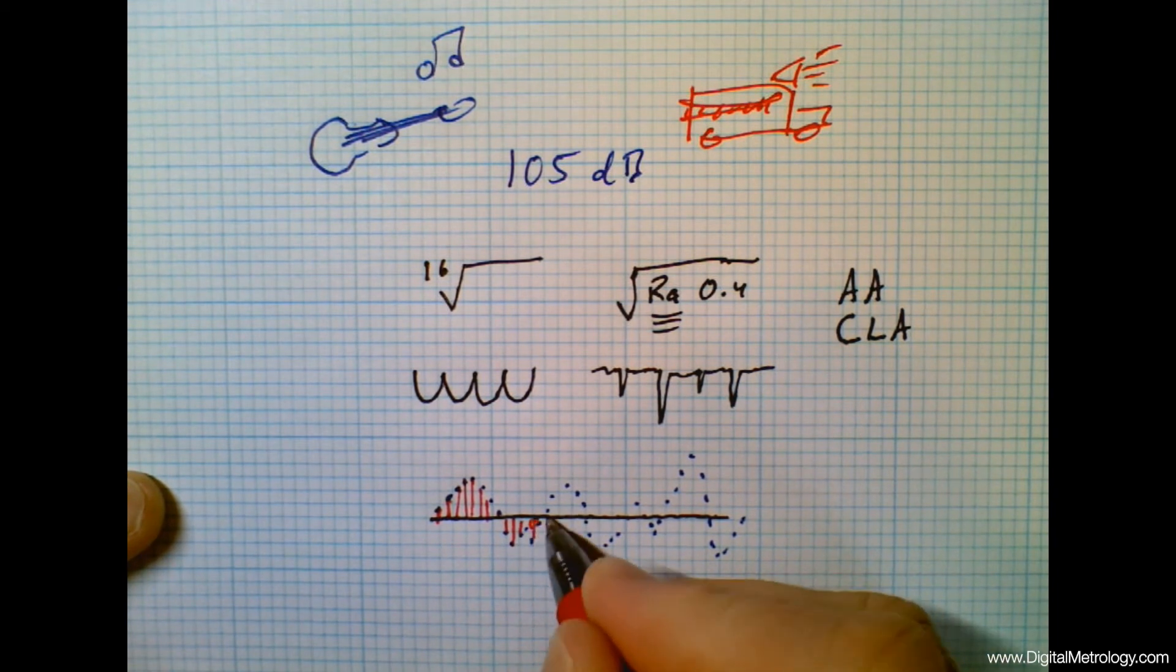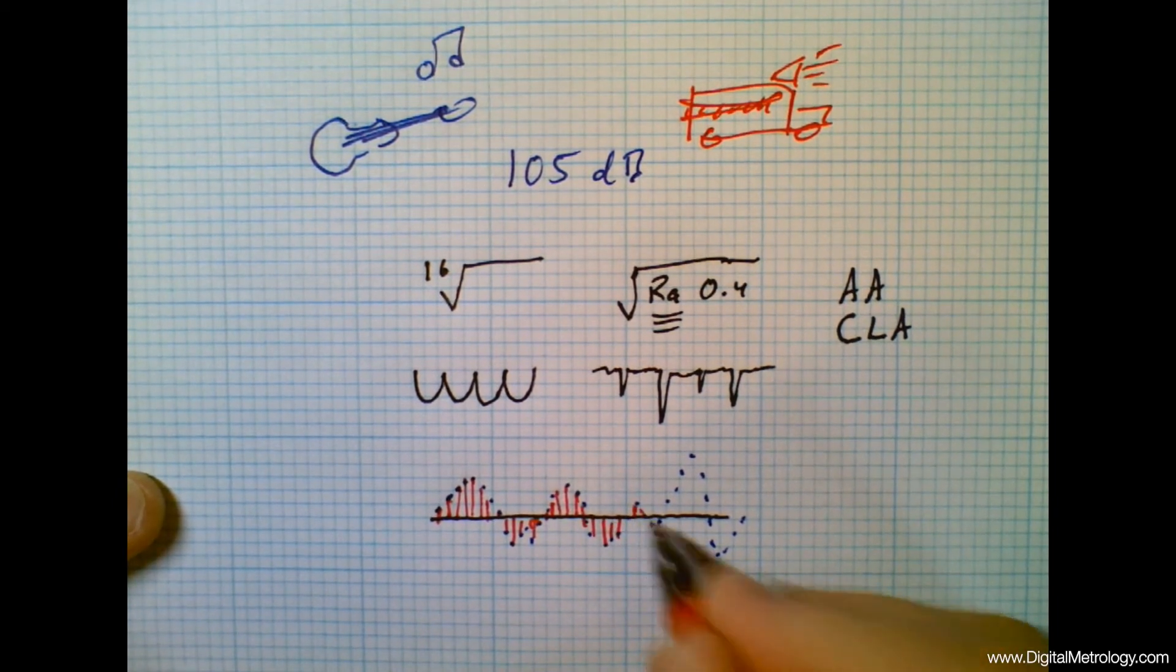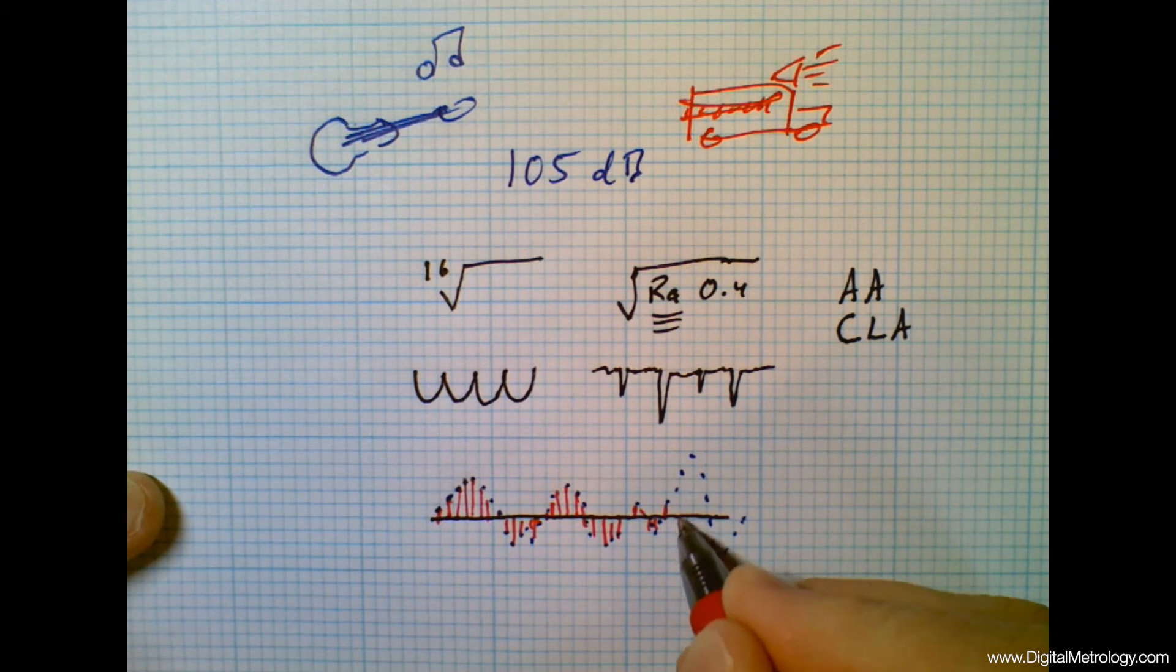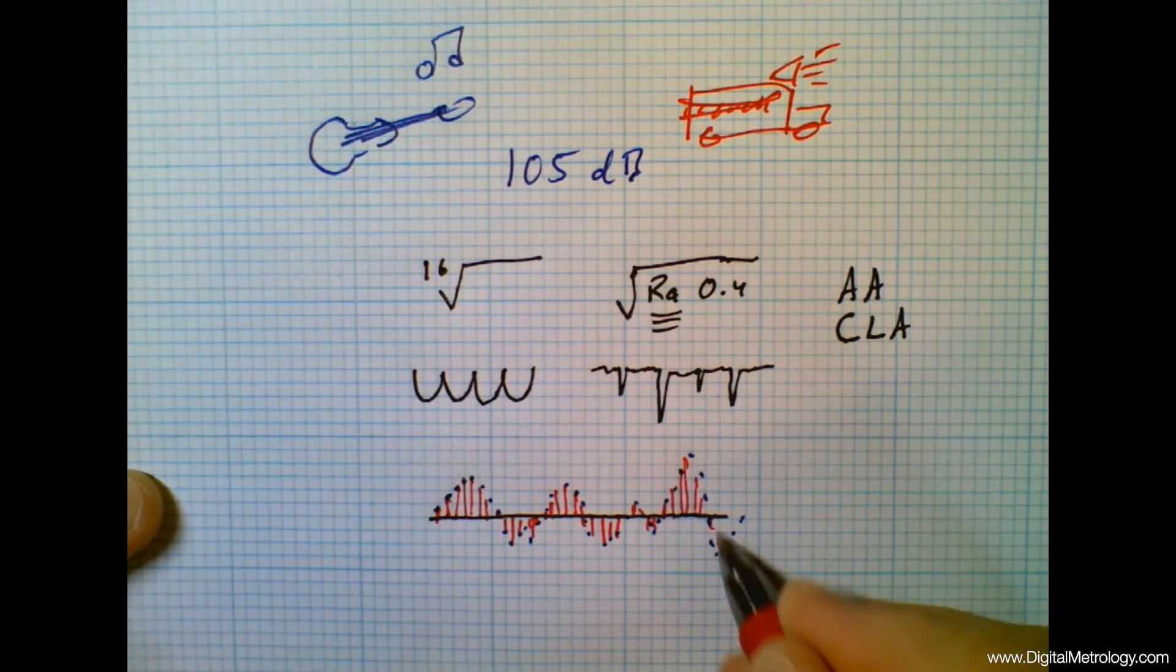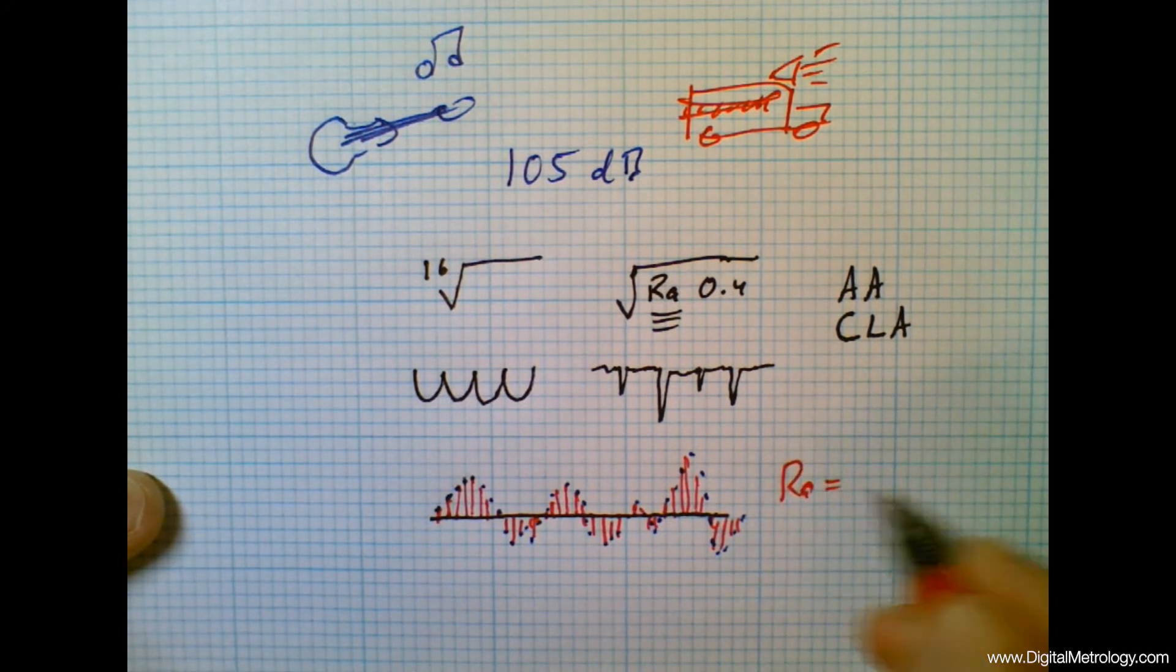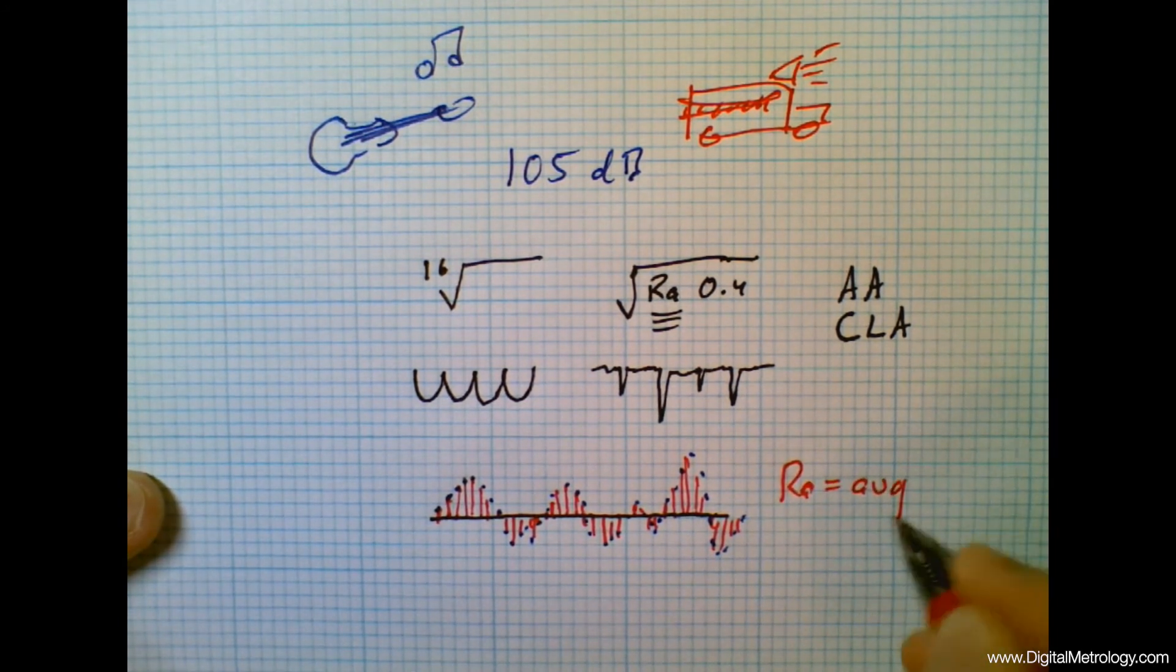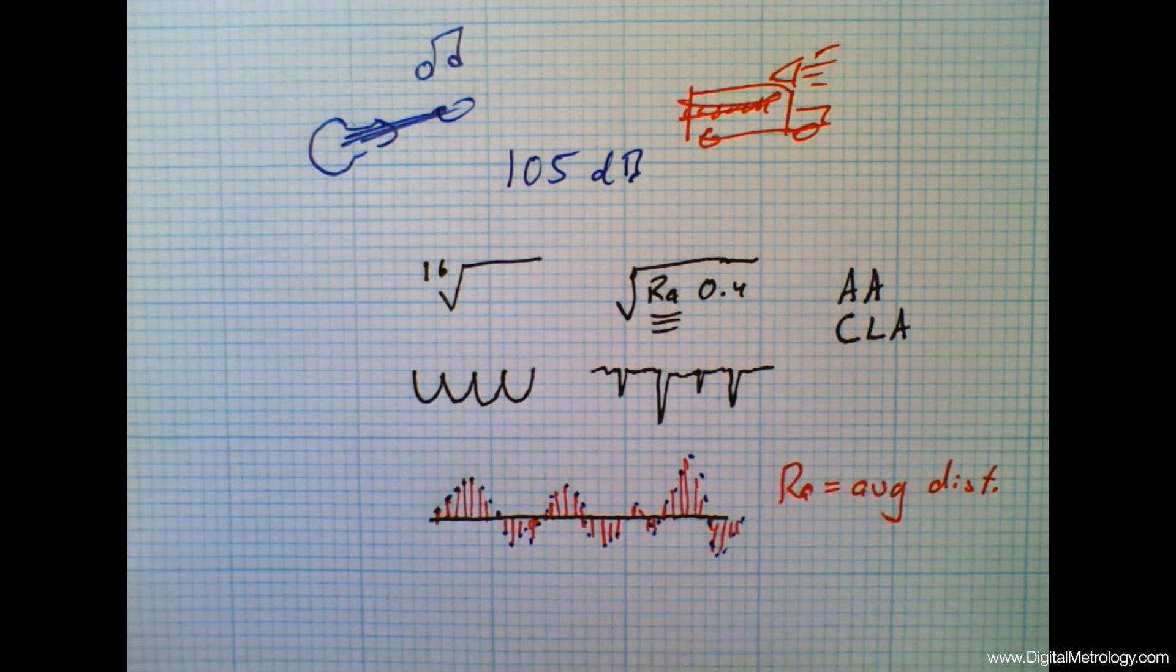So we might have thousands of data points in a profile or even millions in an aerial data set and the A calculation for RA or WA if we're looking at waviness or PA for the primary is simply the average distance from the mean line. We're going to average all of those distances and the result is RA.